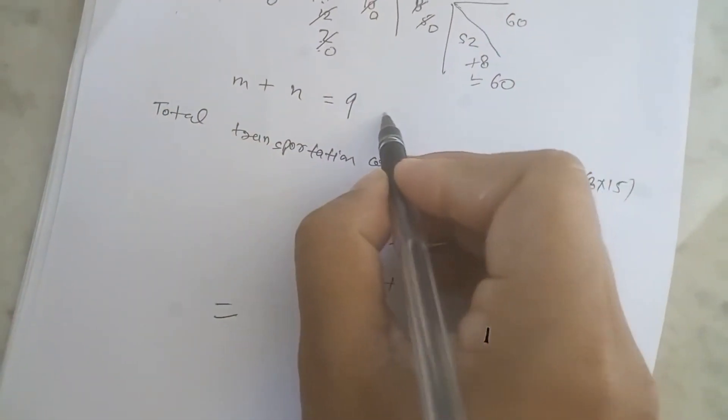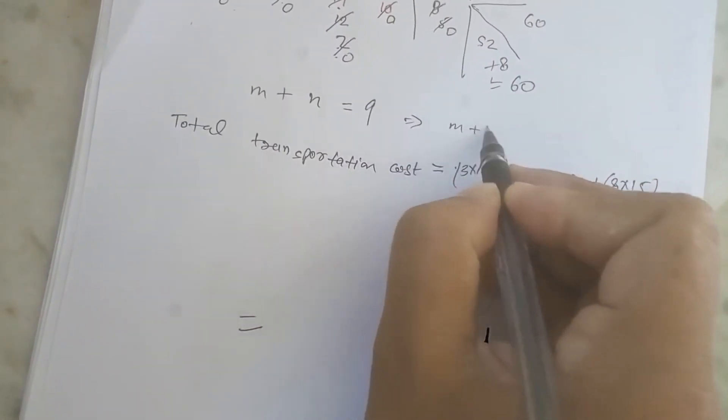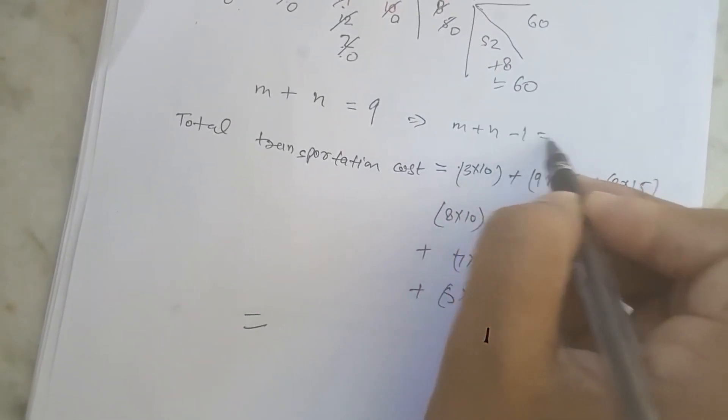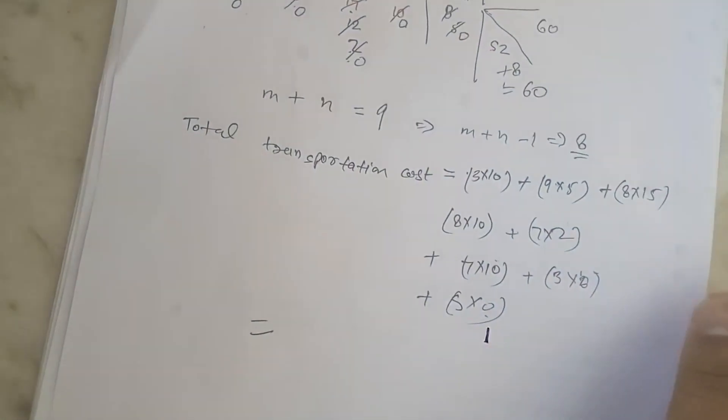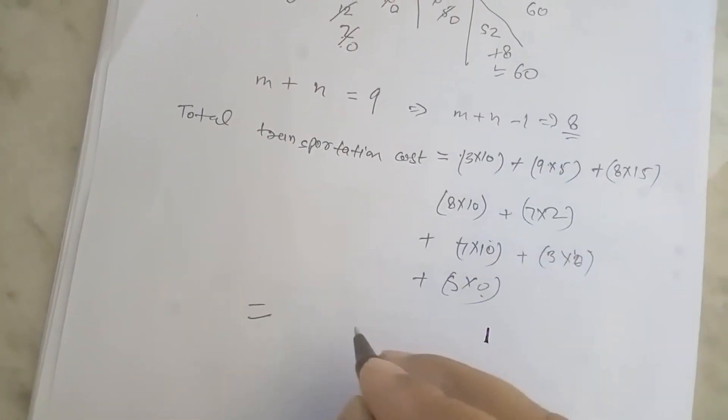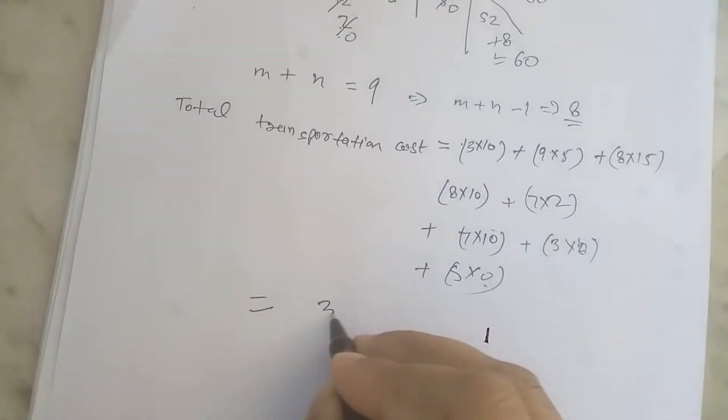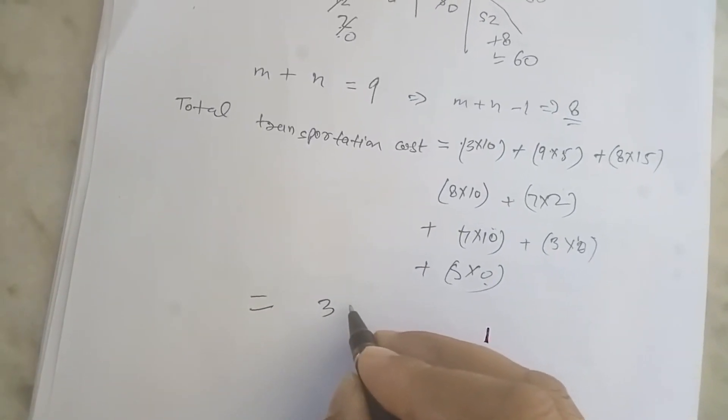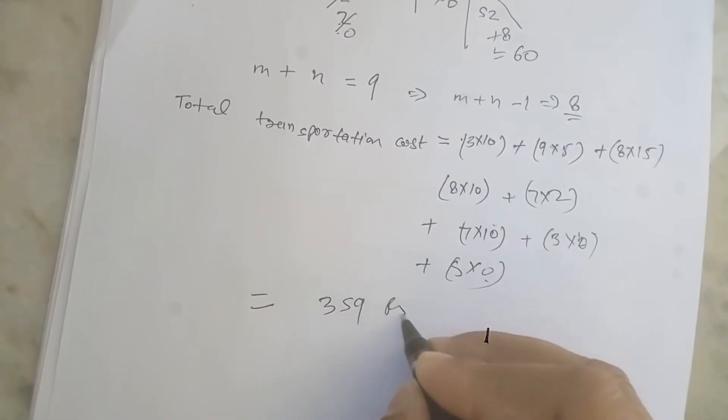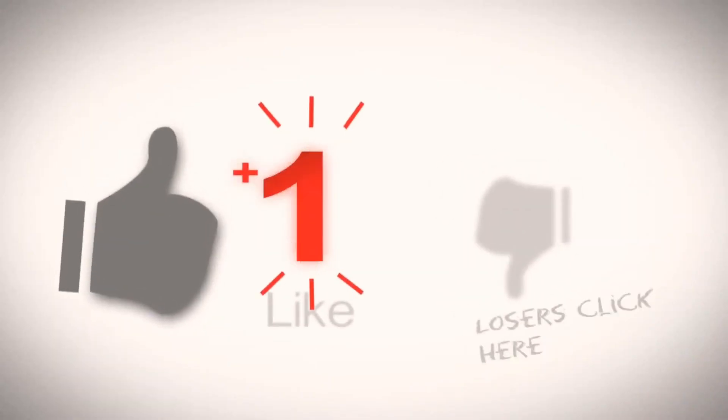We multiply and add. M plus n minus 1 value is equal to 8. We have 8 values. Multiply and add, we get total transportation cost of 359 rupees. Thank you.